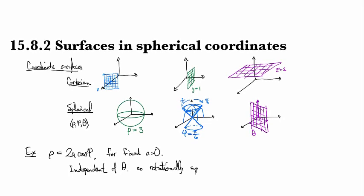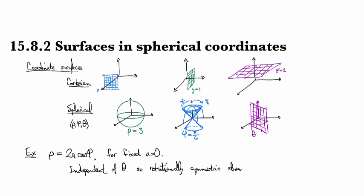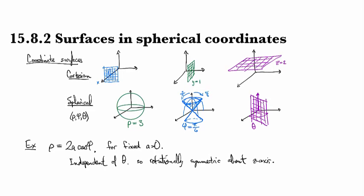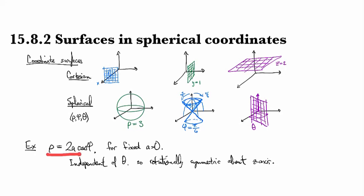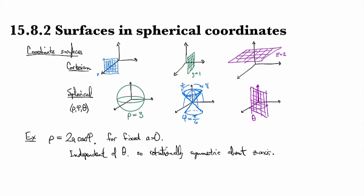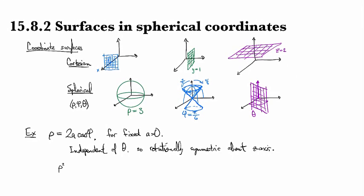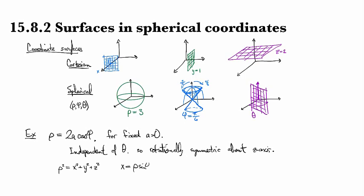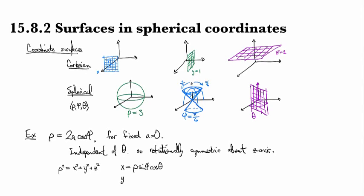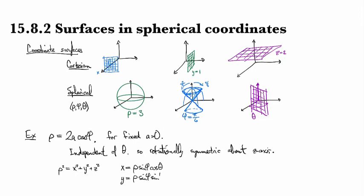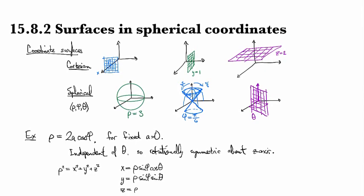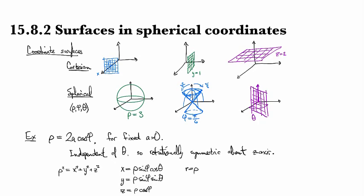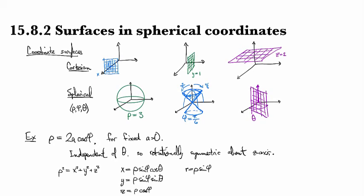What do you notice about this? First observation maybe is that this is independent of theta. So it's going to be rotationally symmetric around the z-axis. Let's take a look at this formula and work in our formulas that we know. We know that rho squared is x squared plus y squared plus z squared. And x is rho sine phi cosine theta, y is rho sine phi sine theta, and z is rho cosine phi.